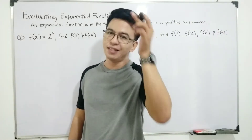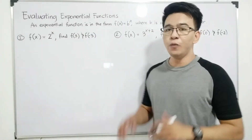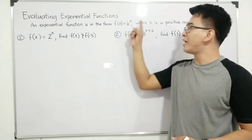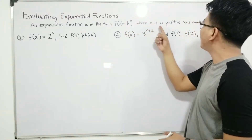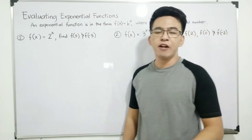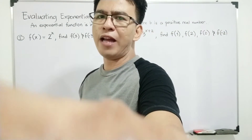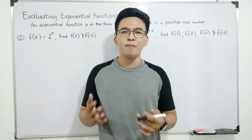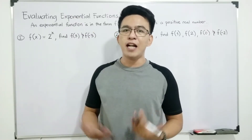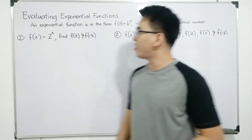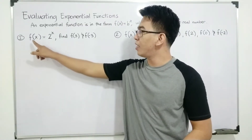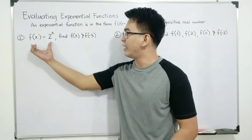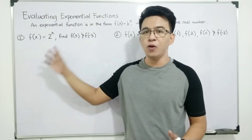So without further ado, let's do this topic. So we have here, an exponential function is in the form f of x is equal to b raised to x, where b, your base, is a positive real number. We're done with so many videos about exponential function. So for example number one, we have the function f of x is equal to 2 raised to x.